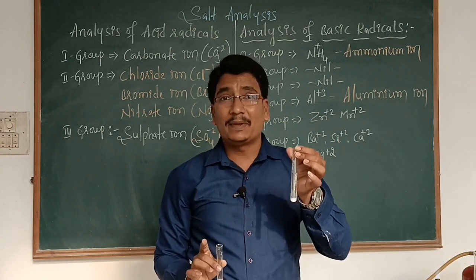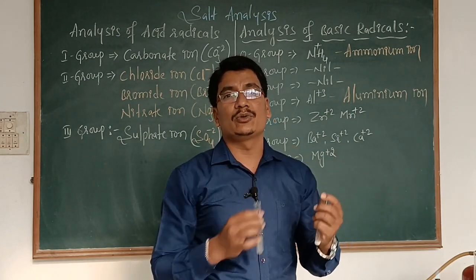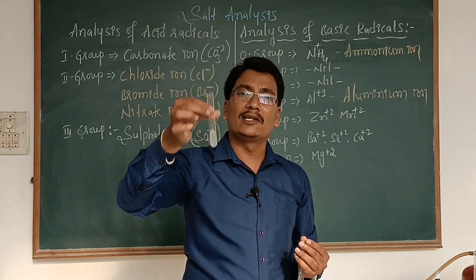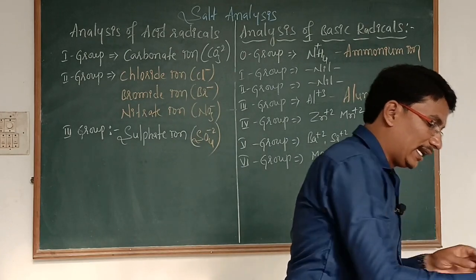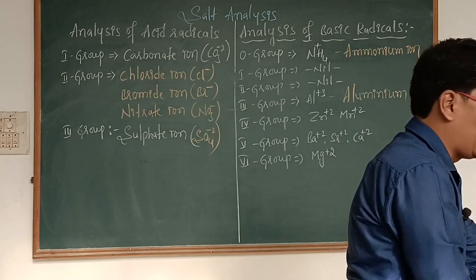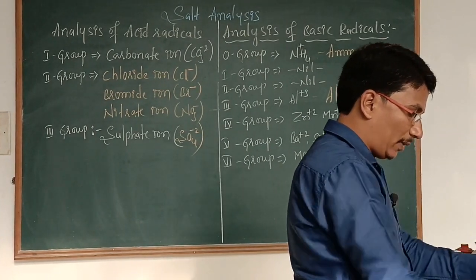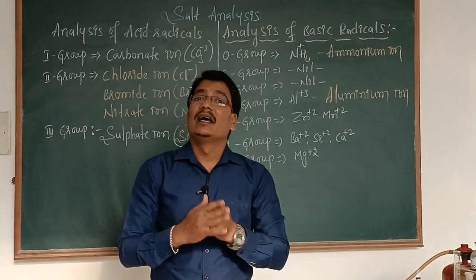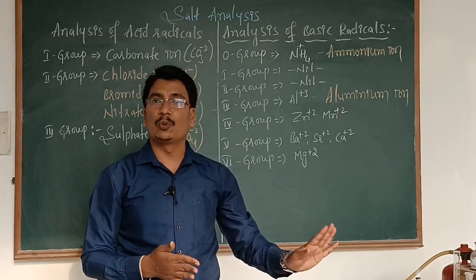For confirmation of carbonate ion, the same fumes are forced through the test tube containing lime water. Salt plus dilute HCl is taken in a test tube and the brisk effervescences are forced through lime water. If the lime water turns milky, it indicates the presence of carbonate ion. For confirmation, we take salt plus water in a test tube, and the same fumes are forced through lime water — if it does not turn milky, it confirms the presence of carbonate ion.